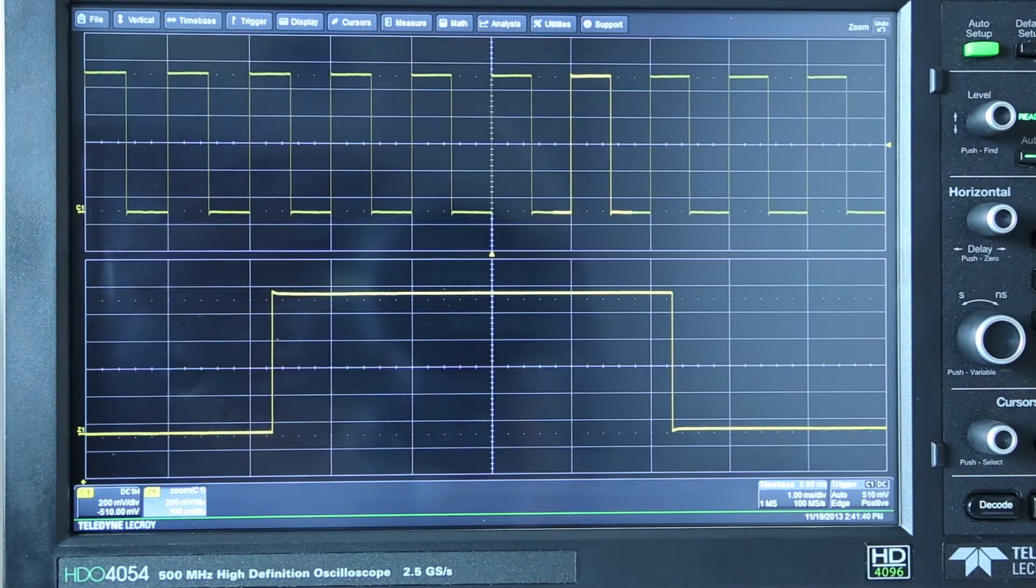Hi everyone. Today we're going to talk about using the zoom function on an HDL4000. The zoom function magnifies a selected region of the specified source trace.